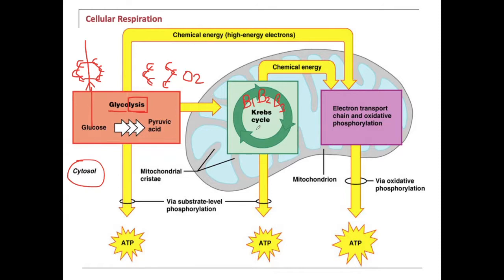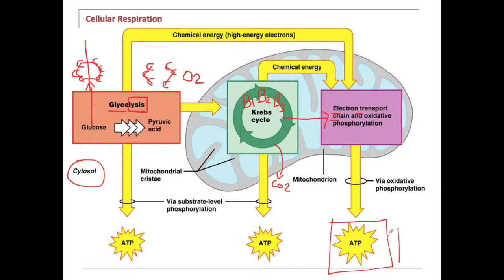The Krebs cycle is involved in some energy production, but not a lot of ATP. But the Krebs cycle is giving off CO2 — carbon dioxide. This is why we exhale: we breathe in oxygen for the Krebs cycle, and then we blow out carbon dioxide. What the Krebs cycle produces is something that's needed by the electron transport chain — and this is the money winner right here. This is what makes lots of ATP: the electron transport chain.